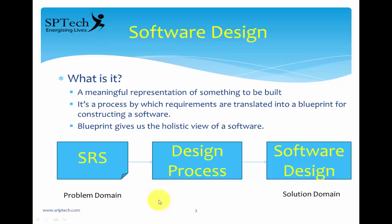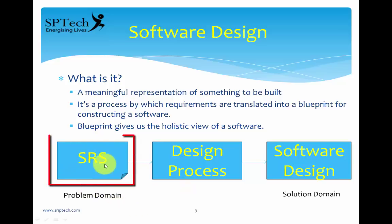When you look at the design you get a fair idea of how the software is going to look like in the near future. It is a process by which requirements are translated into a blueprint for constructing software. In software design, we basically convert requirements into a blueprint. These requirements come from the SRS — Software Requirement Specification — which is a document containing all types of requirements.